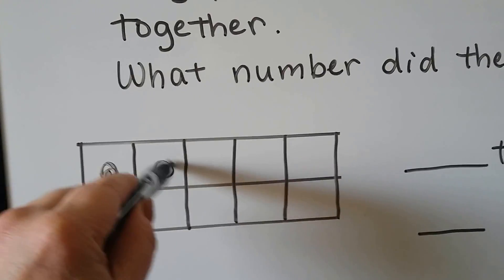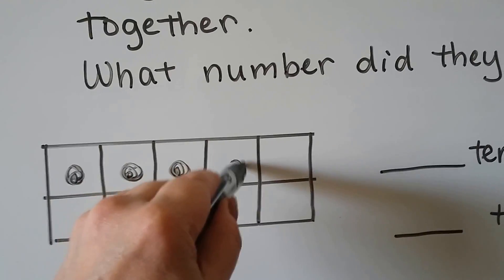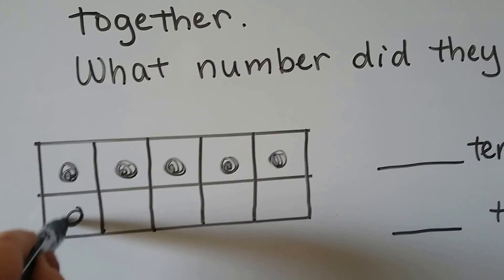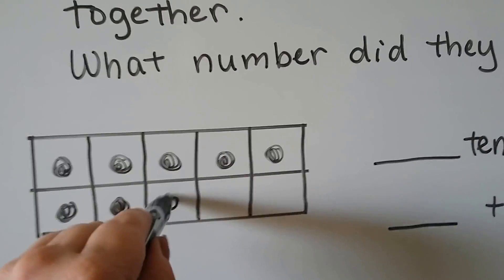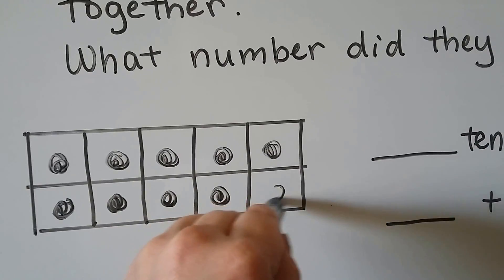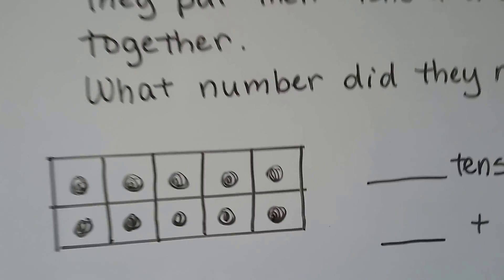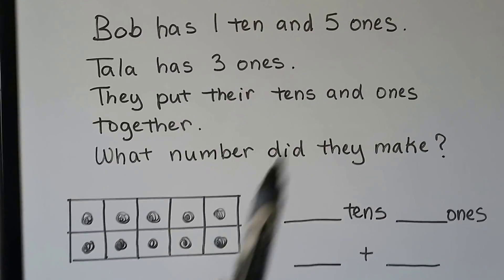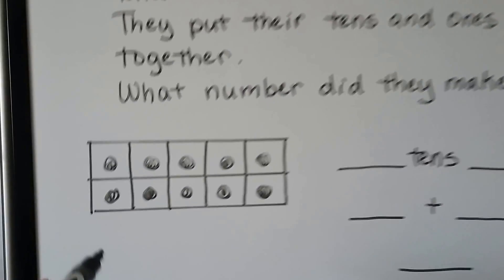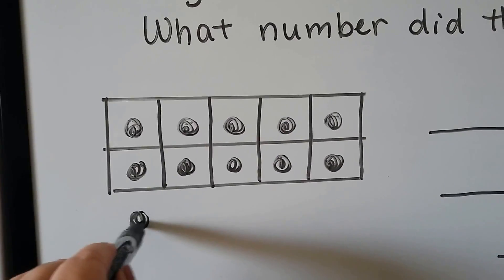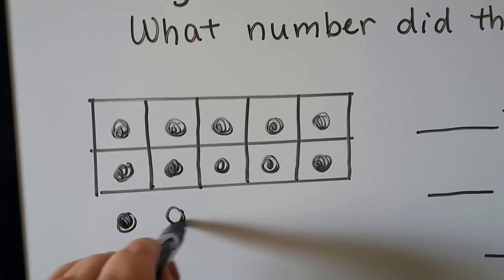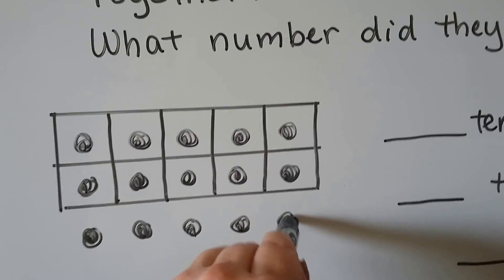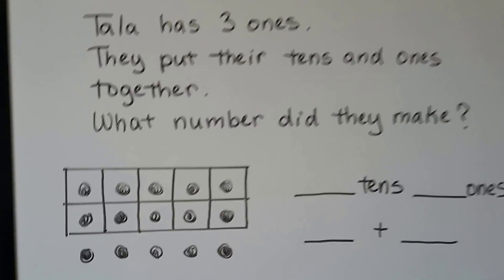1, 2, 3, 4, 5, 6, 7, 8, 9, 10 — so the 10 frame is full. He has 1 ten. But he also has 5 ones, so let's put 5 ones: 1, 2, 3, 4, 5. That's Bob's.